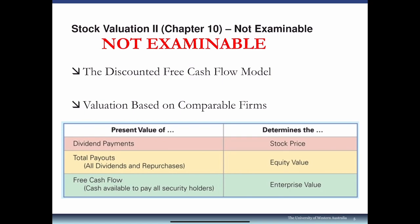Now for the non-examinable component — equity valuation part 2, as promised in week 7. In week 7 we went through the dividend discount model, where we assumed companies will at some stage pay dividends, and as a shareholder your shares give you a claim to the firm's future profitability. We then extended this with the total payout model for share repurchases, and after capital budgeting last week, we can now introduce the free cash flow or DCF model.